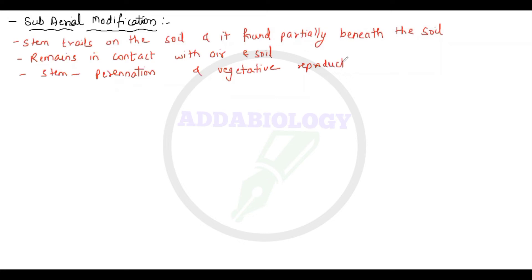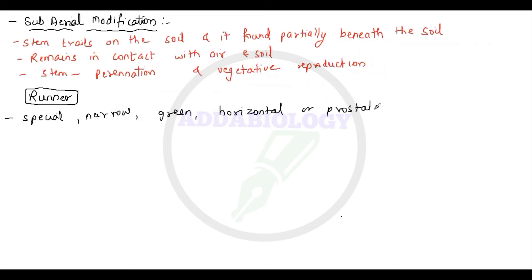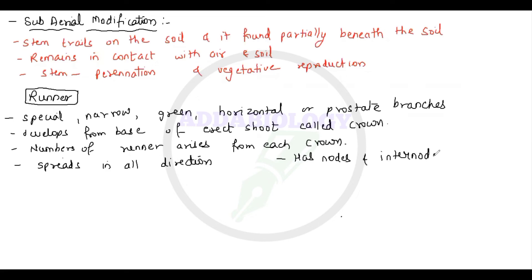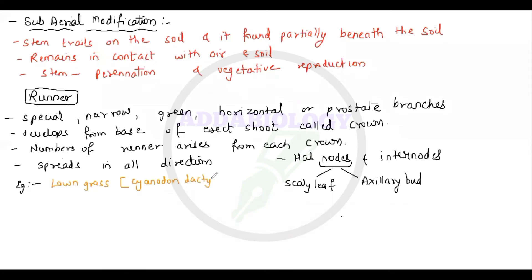Stem modifications are only for perennation and vegetative reproduction. The very first example of sub-aerial modification is the runner. Runners are special narrow, green, horizontal and prostrate branches — they run parallel to the soil surface. They develop from the base of an erect shoot called the crown. Multiple runners arise from each crown and spread in all directions, having nodes and internodes. Nodes bear scaly leaves and axillary buds.